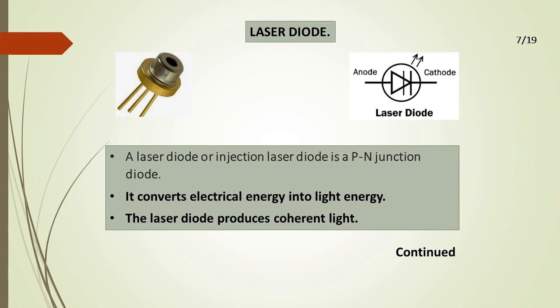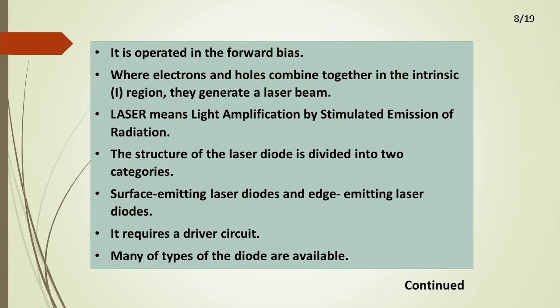Laser Diode. A laser diode or injection laser diode is a PN junction diode. It converts electrical energy into light energy. The laser diode produces coherent light. It is operated in forward bias, where electrons and holes combine together in the intrinsic region and generate a laser beam. Laser means Light Amplification by Stimulated Emission of Radiation.